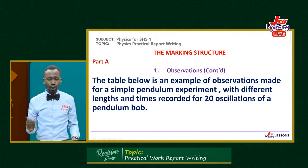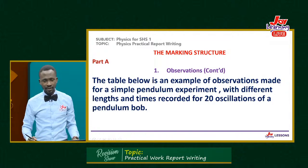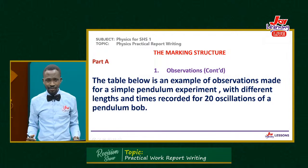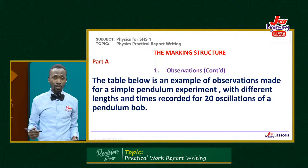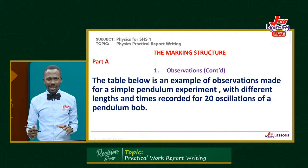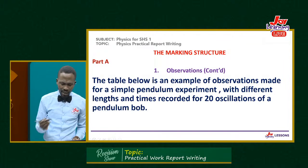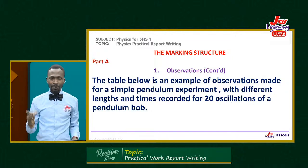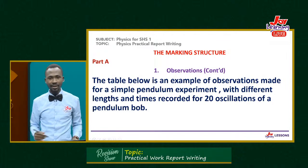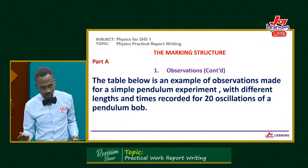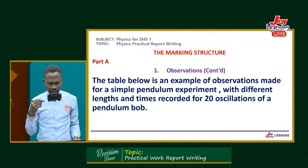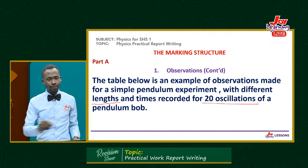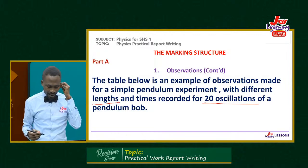I'm going to show you a table briefly. A candidate went through some practical work and presented their table. We will observe the table and learn important things from it. This table shows observations made for a simple pendulum experiment. As a candidate, you should have gone through several simple pendulum experiments. In this particular one, the candidate was given different lengths and asked to record the times for 20 oscillations — two times each.